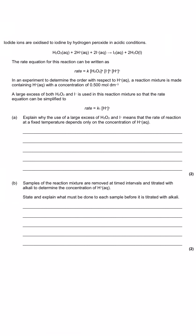In an experiment to work out the order with respect to the acid, a reaction mixture is made containing acid with a concentration of 0.5. We use a large excess of both the hydrogen peroxide and the iodide, so the rate equation can be simplified. It looks similar to the first rate equation but we've got a different constant because we've changed some of the conditions — this time the constant is k with little subscript one. And our command is to explain why the use of a large excess of hydrogen peroxide and iodide means the rate of reaction at a fixed temperature depends only on the concentration of hydrogen ions.